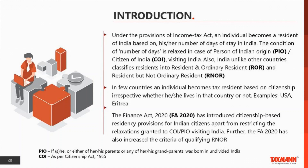The meaning of 'person of Indian origin' is given in Section 115C: if a person, or either of his parents, or any of his grandparents, was born in undivided India, the person is treated as a person of Indian origin. 'Citizen of India' is not defined in the Income Tax Act, so we take guidance from the Citizenship Act 1955. A person can become a citizen of India by birth, descent, or naturalization. We should note that OCI cardholders — Overseas Citizens of India — are not treated as citizens of India despite the nomenclature.